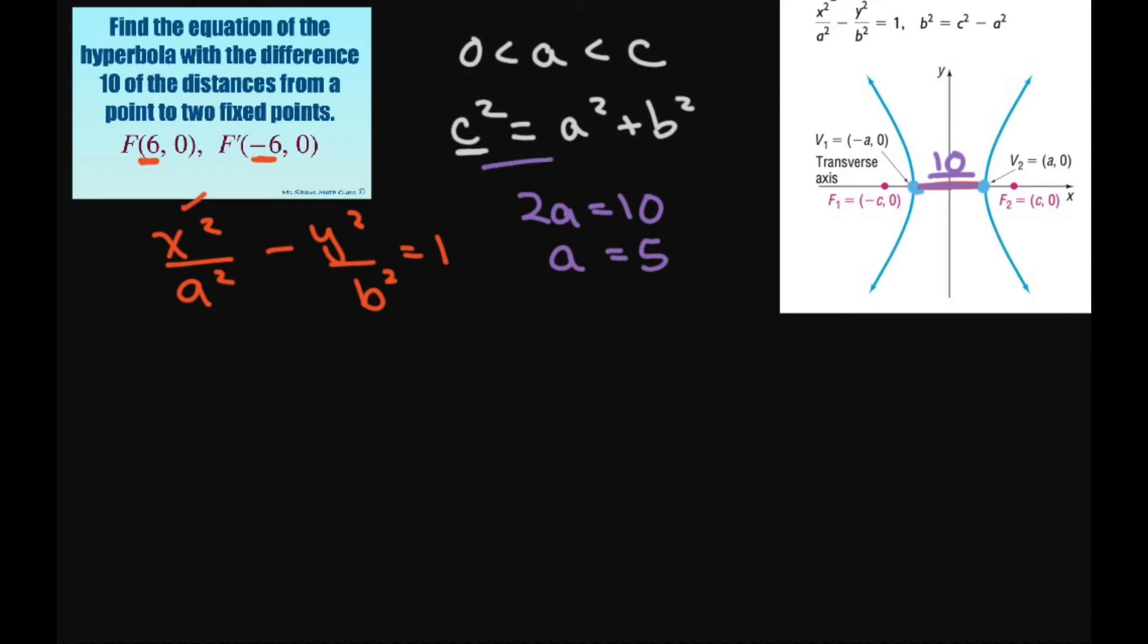We have this formula here, and we know that c is going to be 6. So we have c equals 6. So using this formula, we're going to get c squared, which is 6 squared equals 5 squared plus b squared. Therefore, b squared equals 36 minus 25, which equals 11.